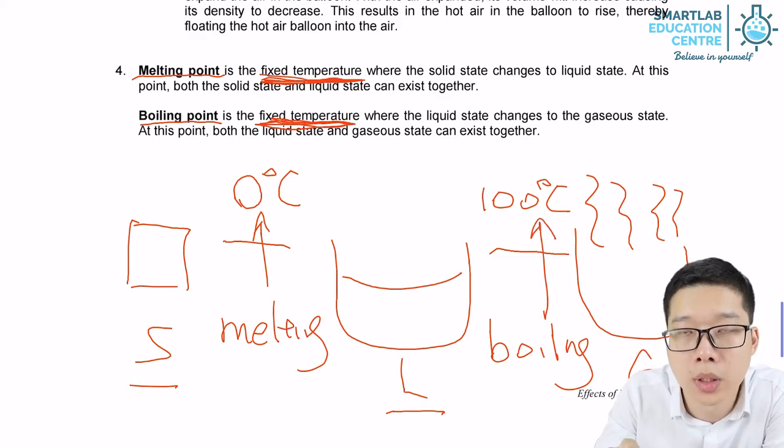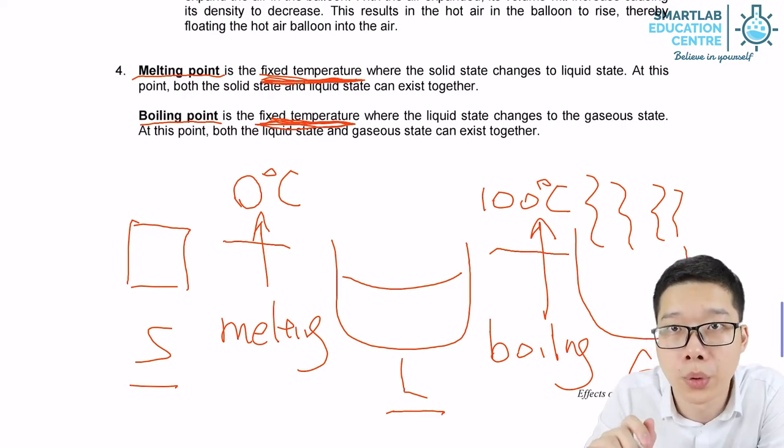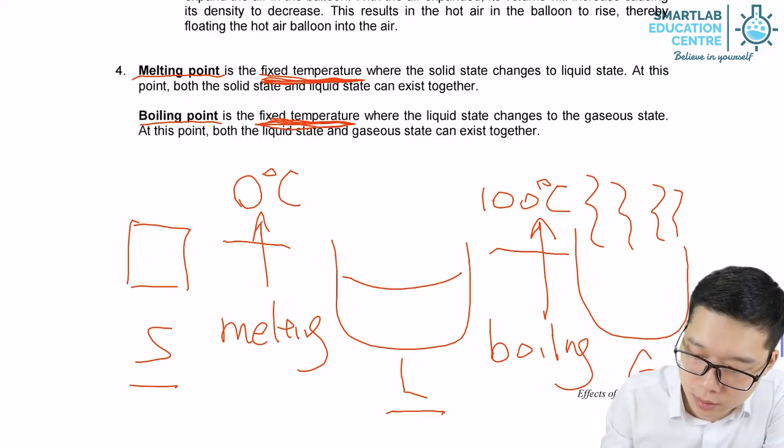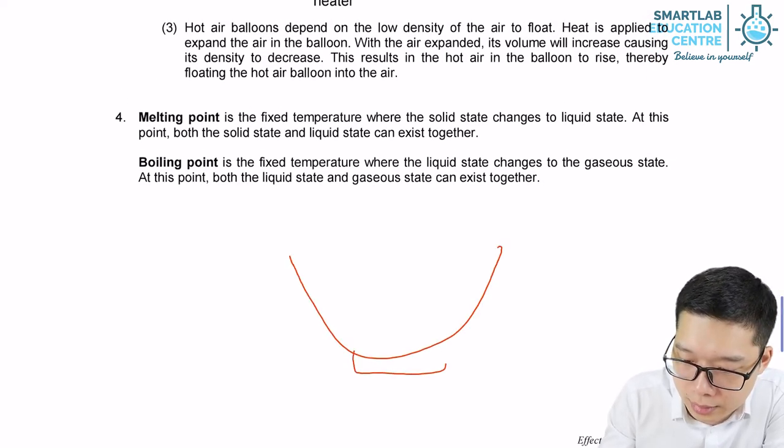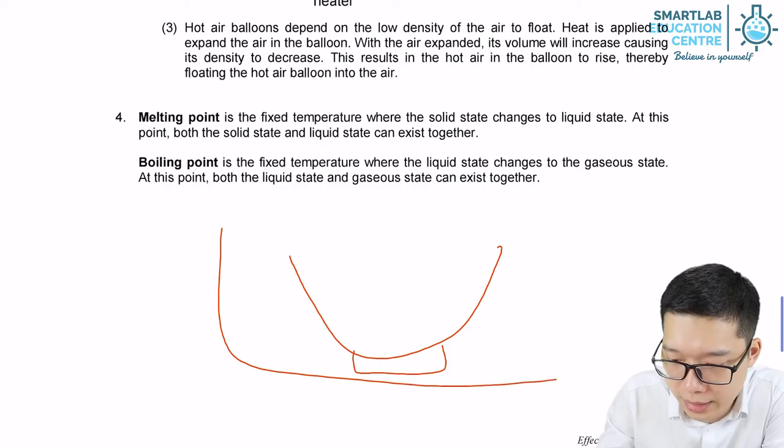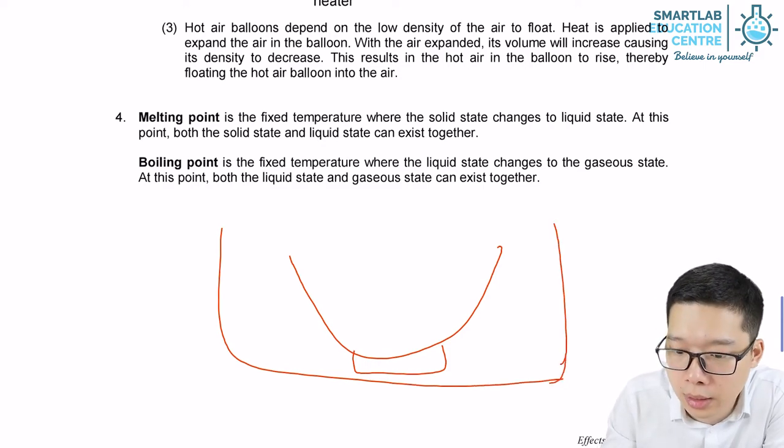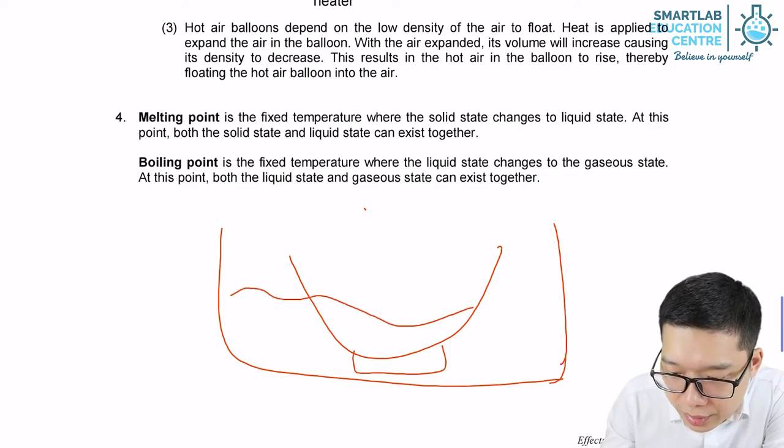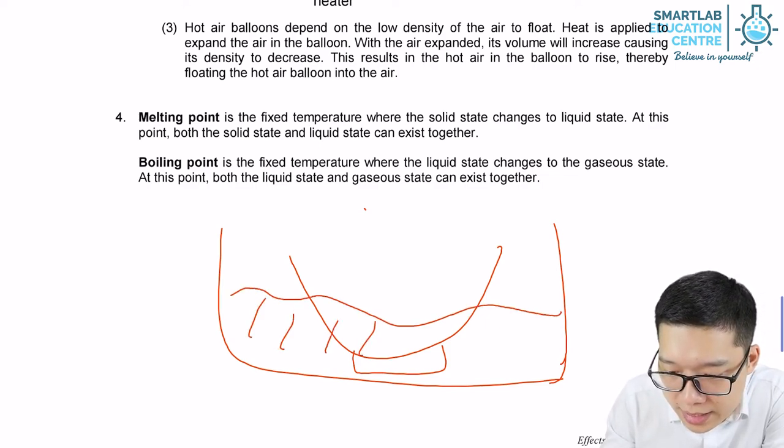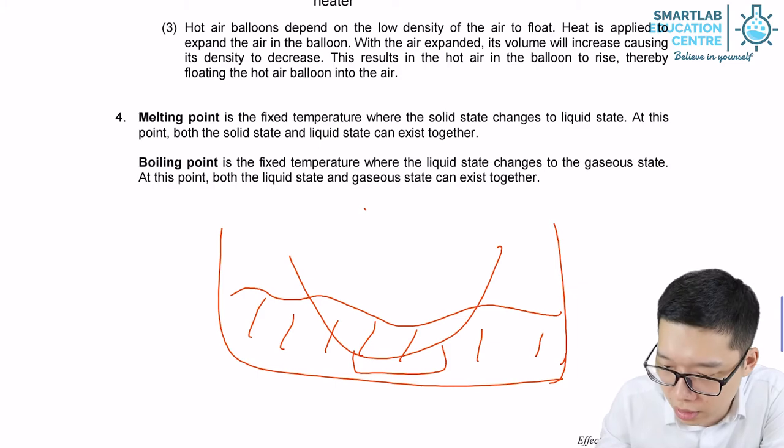Fixed temperature only happens for pure substance. So for example, if we have a plastic bowl and then we try to heat it up, we try to melt it, we observe it will become softer and then finally become liquid state. And through all the process, the temperature keeps going up.